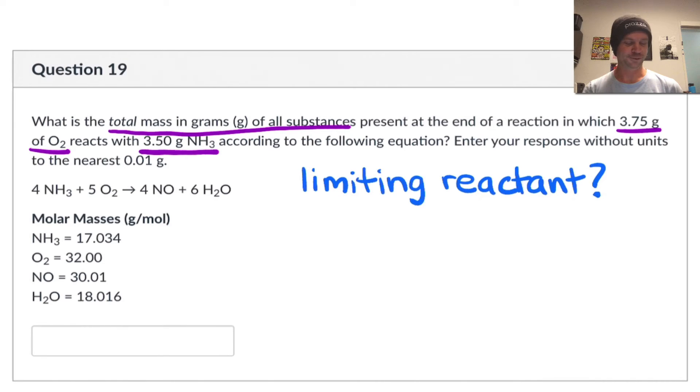A simpler way to approach this problem involves realizing that it's asking for the total mass of all material. And because of conservation of mass, the total mass of all material in the reaction mixture cannot change from the start to the finish. So given these initial masses of material, 3.75 grams and 3.5 grams of the reactants, the total mass at the end of the reaction must equal the total mass at the start of the reaction, that's conservation of mass, and so the total mass at the end of the reaction is simply 3.75 grams.